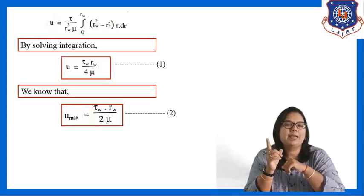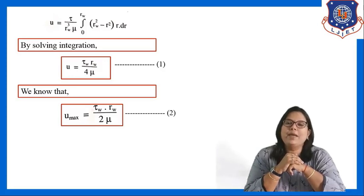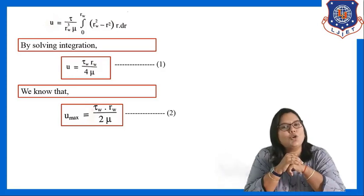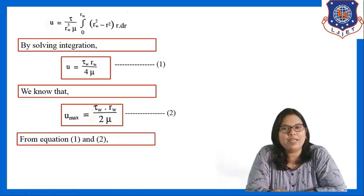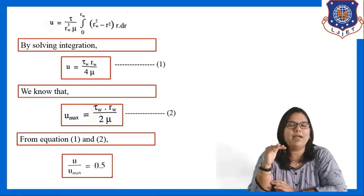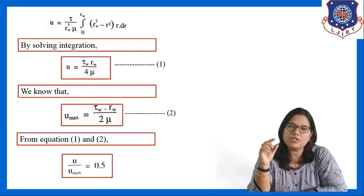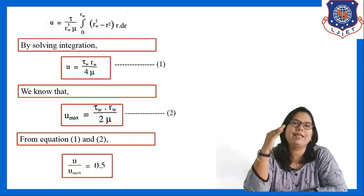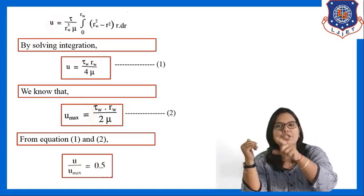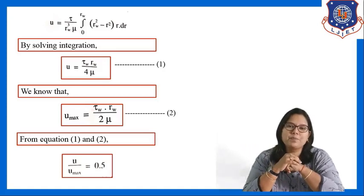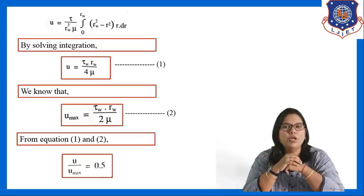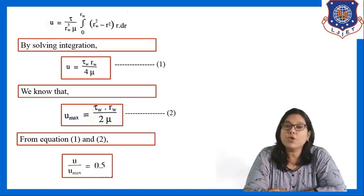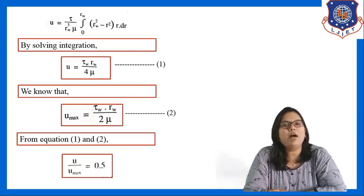Taking the ratio ū / u_max by dividing equation 1 by equation 2: average velocity ū is tau_w · r_w / (4·mu) and u_max is tau_w · r_w / (2·mu). Dividing these, ū / u_max = 2/4 = 0.5. So it is proved that the average velocity equals one-half of the maximum velocity: ū = 0.5 · u_max.